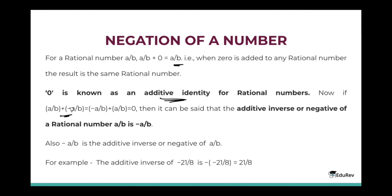Now, if I add a/b to its negative, the sum is going to give me 0. Then it can be said that the additive inverse or negative of a rational number a/b is negative of a/b. Also, negative of a/b is the additive inverse of a/b. For example, the additive inverse of negative 21/8 is positive 21/8.